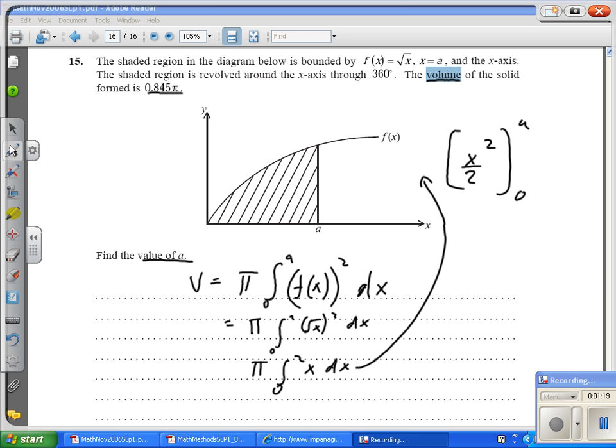So because there's 0 here, we can just cancel it out, so it's replaced by A. We get A squared over 2 times π. Therefore, 0.845π equals π A squared over 2.